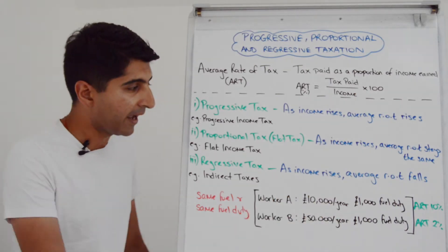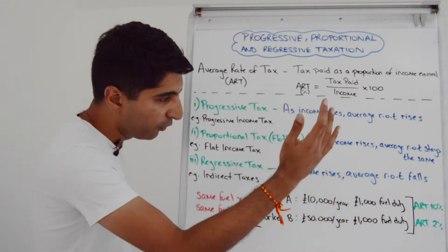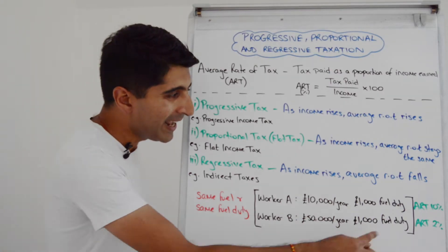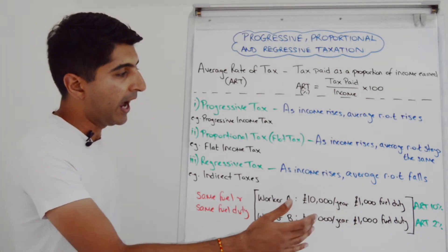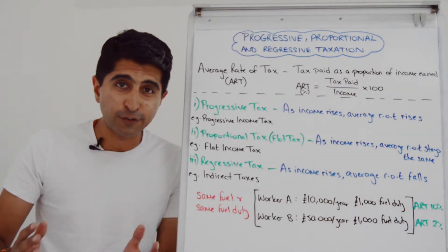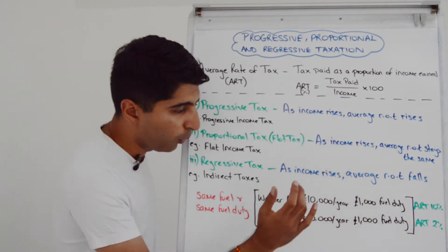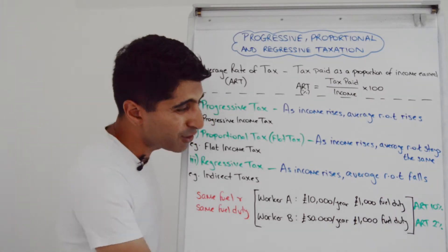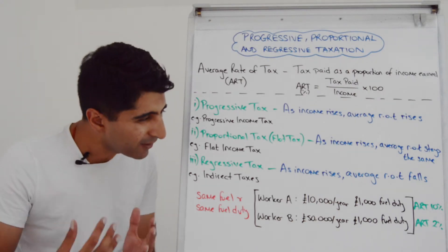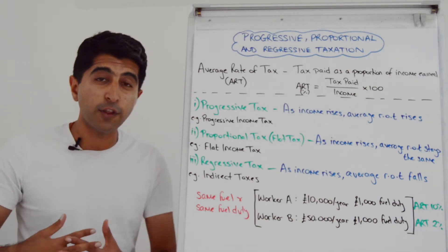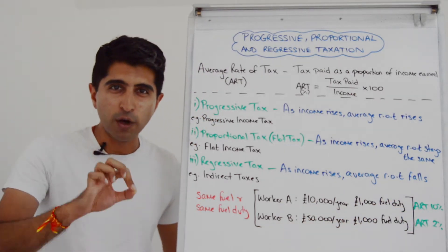Now let's work out the average rate of tax. We take £1,000 — the amount of tax paid — and divide by income. For Worker A: £1,000 divided by £10,000 times 100 gives an average rate of tax of 10%. So fuel duty is taking 10% of Worker A's total income. Whereas for Worker B: £1,000 divided by £50,000 times 100 gives an average rate of tax of only 2%. So we can clearly see that regressive taxes burden those on lower incomes — they take a greater proportion of income from low-income households than from high-income households.